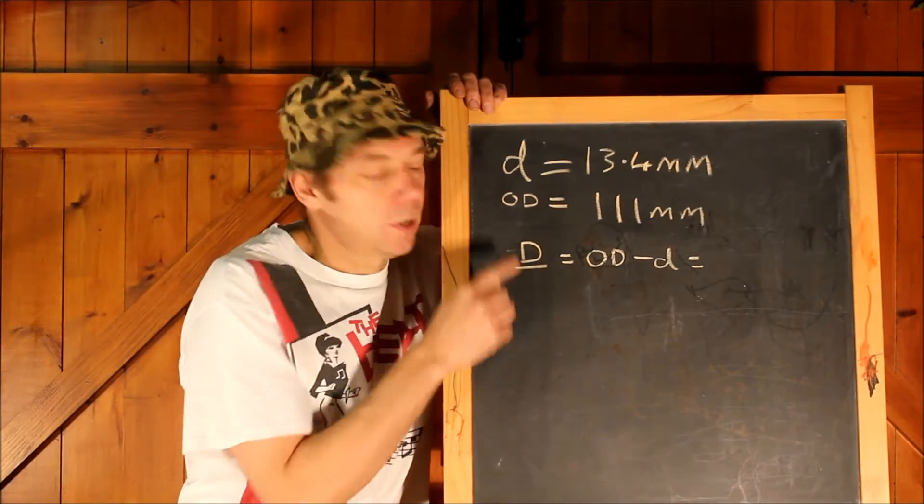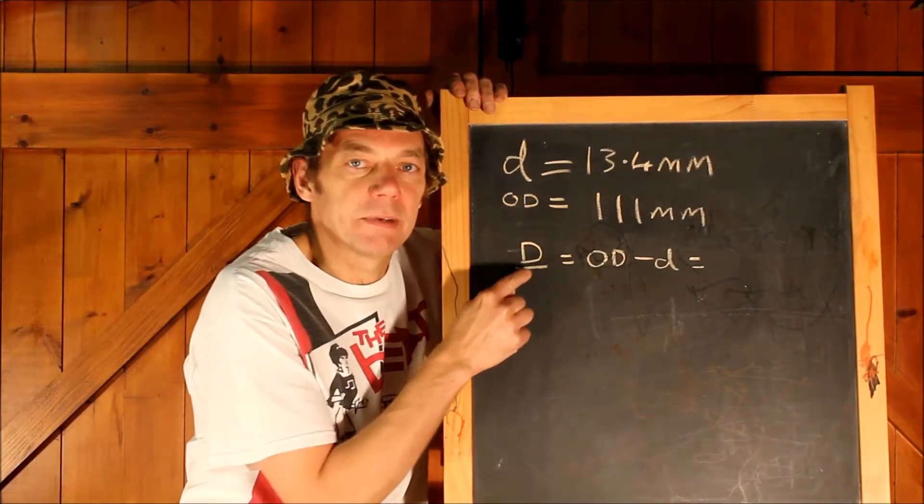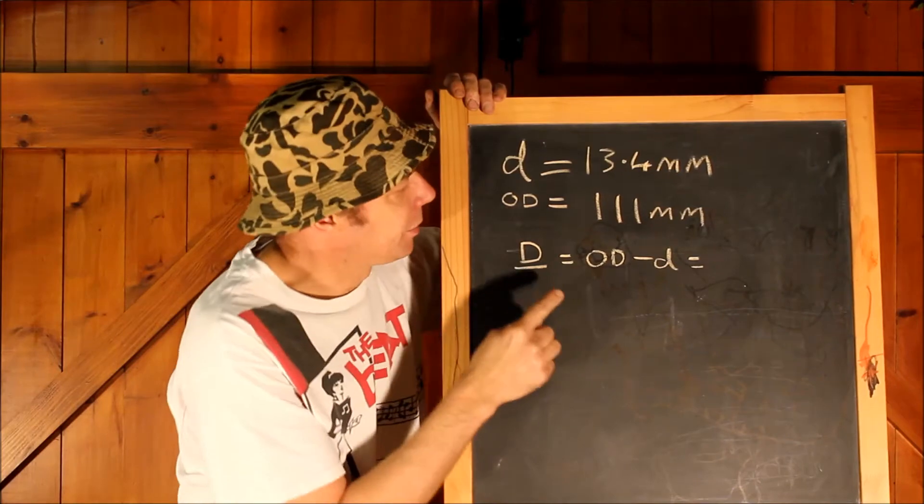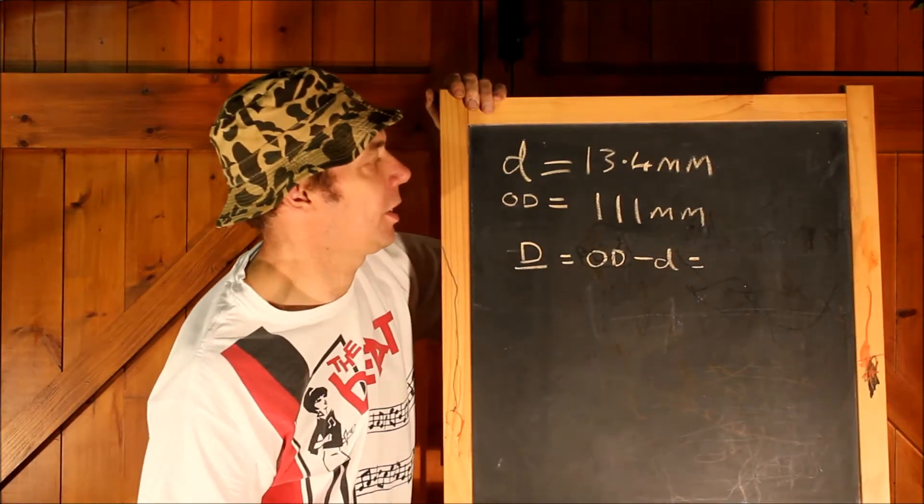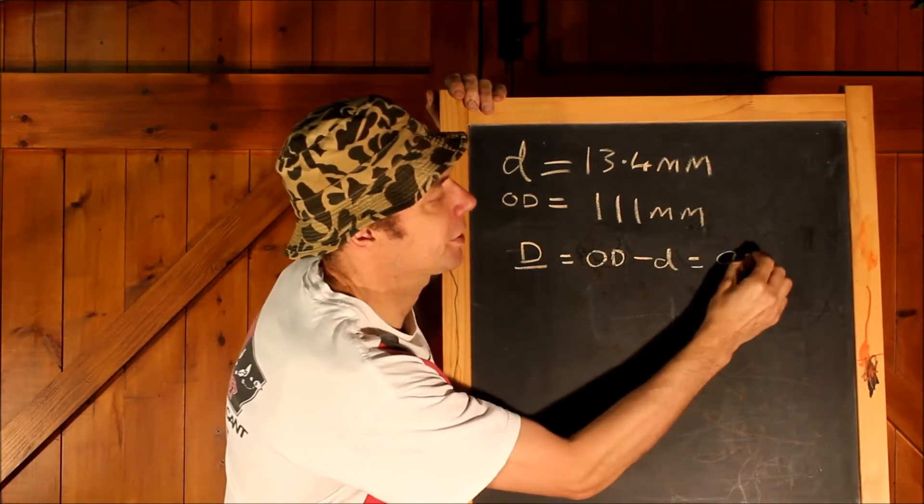And from those measurements, work out the mean coil diameter, which is simply the outside diameter minus the wire diameter, which in this case is 111 millimeters minus 13.4 millimeters, which is 97.6 millimeters.